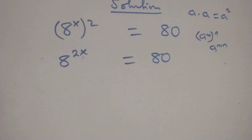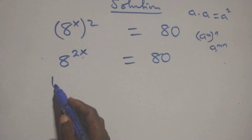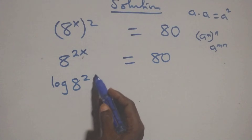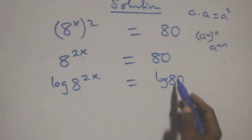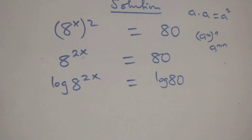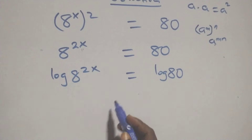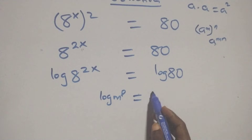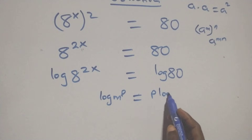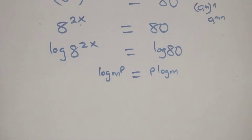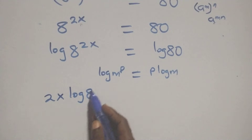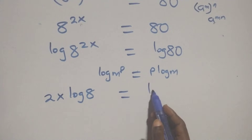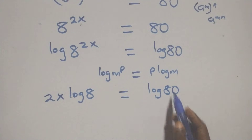The next step: apply the log on both sides. Here we have log of 8 to the power 2x equals log 80. Then, applying the power rule of logarithms — log of m raised to power p equals p times log m — we have 2x times log 8 equals log 80.